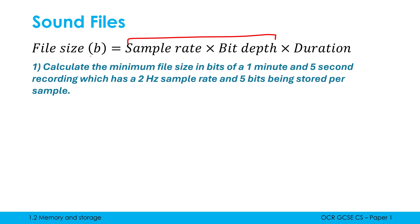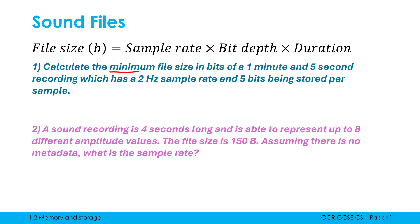So here are two questions which we can practice this on. We first of all need to calculate the minimum file size in bits of a one minute and five second recording which has a two hertz sample rate and five bits being stored per sample. That last bit is our bit depth. So file size is going to be equal to the sample rate which is two hertz multiplied by the bit depth which is five bits multiplied by the duration where the duration always needs to be in seconds for this to work. And currently it's in minutes and seconds. So one minute and five seconds is 65 seconds. Let's do this step by step. Two times five is ten. Then ten times 65 is going to be 650. And the unit is bits here.